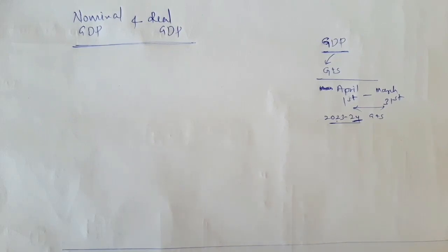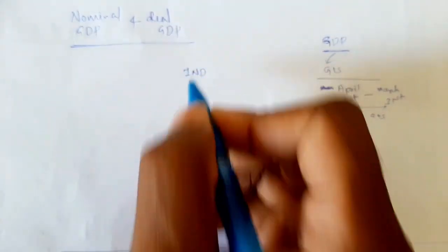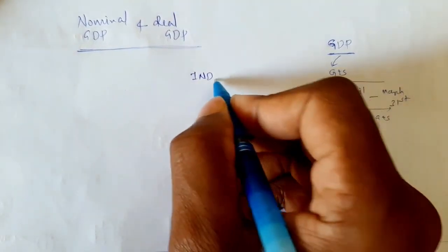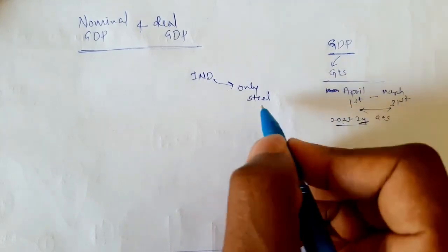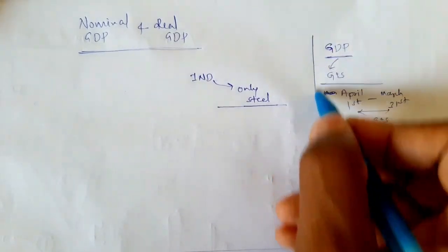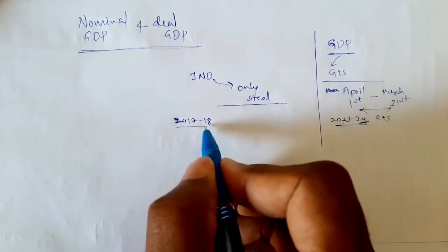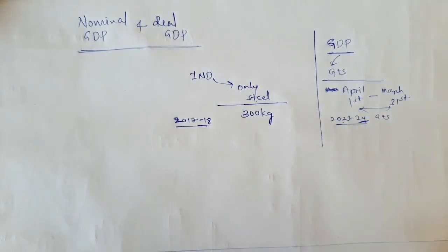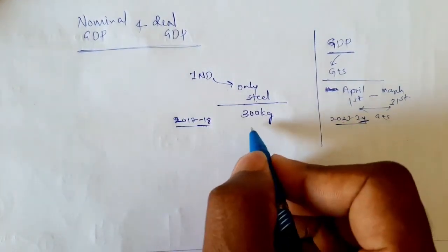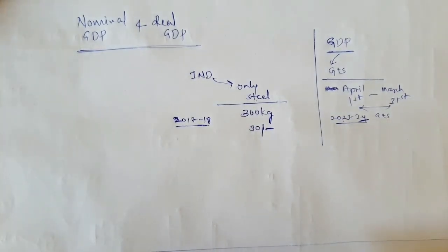I will explain nominal GDP and real GDP by taking one example. Let's assume India produces only one good — that is steel. Let's take one random year, for example 2017-18. In this financial year, India produces only one good, that is steel. The amount produced is 300 kg of steel in this financial year, and the price of 1 kg of steel is 30 rupees.